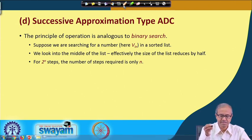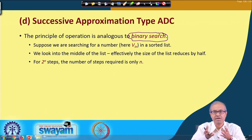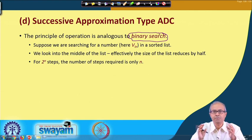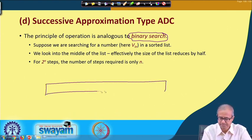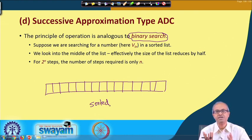The principle of operation is analogous or similar to binary search. For those of you who are familiar with programming and have some basic knowledge of data structures, you may have come across the binary search algorithm. Let me explain binary search for those who do not know it. Assume that I have a list of numbers stored in an array, and these numbers are sorted in either ascending or descending order. Now I want to search for a number — let us say 45 — to find out whether it is present or not.